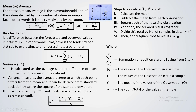Coming to the second one — bias. As already mentioned, it is simply the difference between the forecasted and observed data. It gives the tendency — I mean the overestimate or underestimate tendency of a parameter. When you calculate the bias or error, it tells you the overestimating or underestimating tendency of a model.